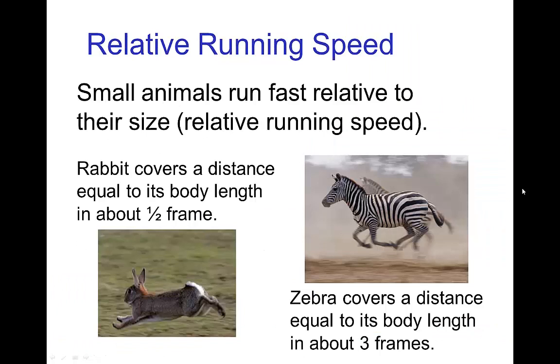Although the absolute speed in terms of miles per hour is similar for all of these animals, the relative speed—that is, how much time it takes for them to cover distance equal to the length of their body—small animals run fast relative to their size.